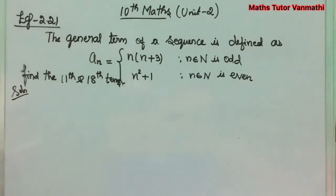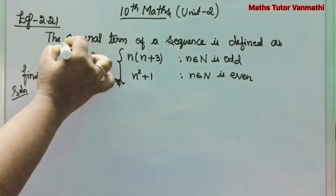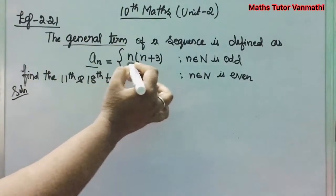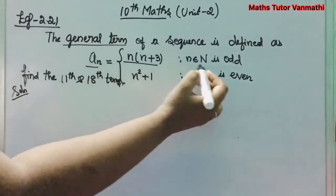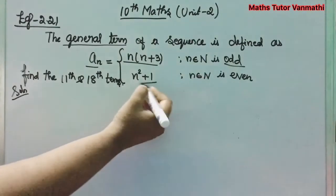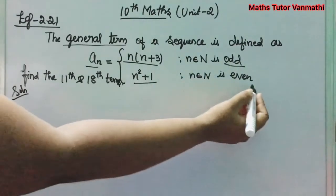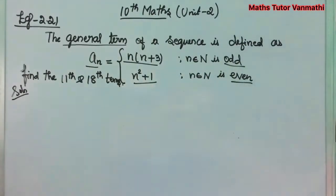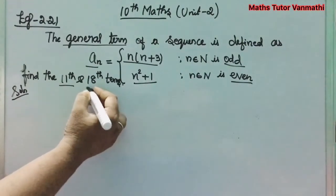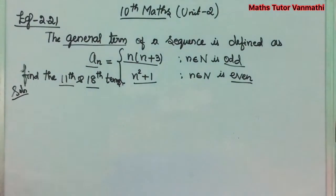We have given the general term: a_n = n(n+3) when n is odd, and n² + 1 when n is even. We are going to find the 11th and 18th terms.